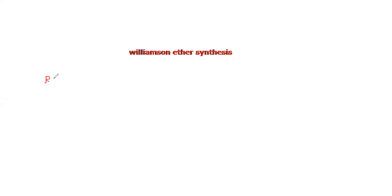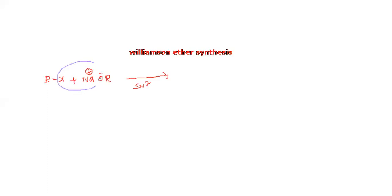In this case, we are taking the first alkyl halide which is treated with sodium or potassium. In general, we are taking sodium salts of alkoxide. Here it is actually an SN2 reaction — loss of NaX — and it forms ROR', which is the ether, along with NaX.